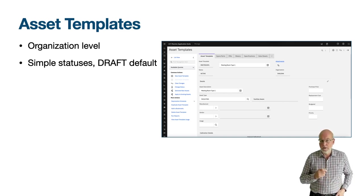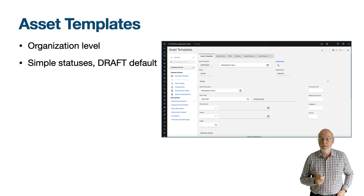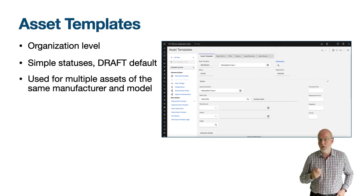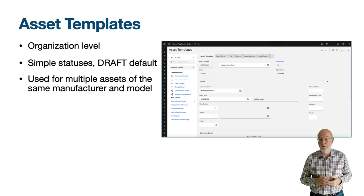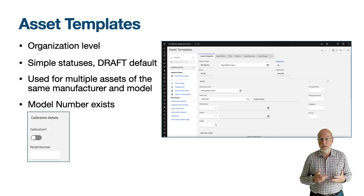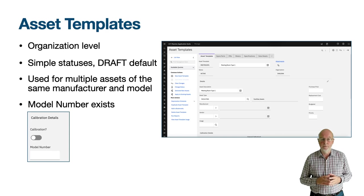You use an asset template when you have several similar assets of the same type that would have the same meters, classification characteristics, and spare parts — think of assets in a storeroom bin, probably the same item based on a manufacturer's model. There is no item number in the application, and while there is a manufacturer field, until Maximo Manage you needed a calibration license to access the model number field. It will now be found in the calibration details section and you do not need to mark the record as a calibration asset to use this field. There is also a rotating item field which is hidden — I'll return to this in the last section.